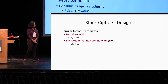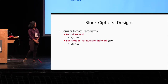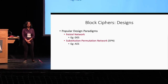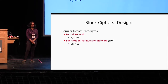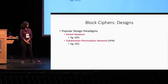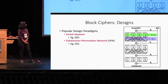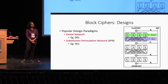There are two popular design paradigms for designing block ciphers. These are the Feistel network — for example, the Data Encryption Standard DES, which used to be the previous standard, is based on a Feistel network. And the current block cipher standard by NIST, AES, is actually a substitution permutation network. This figure on the right shows an example of an SPN.